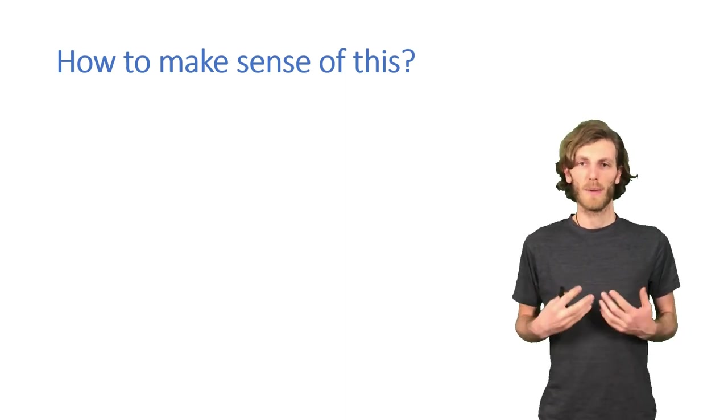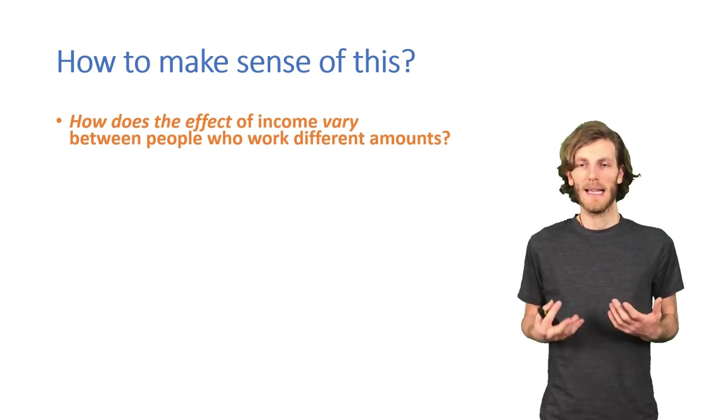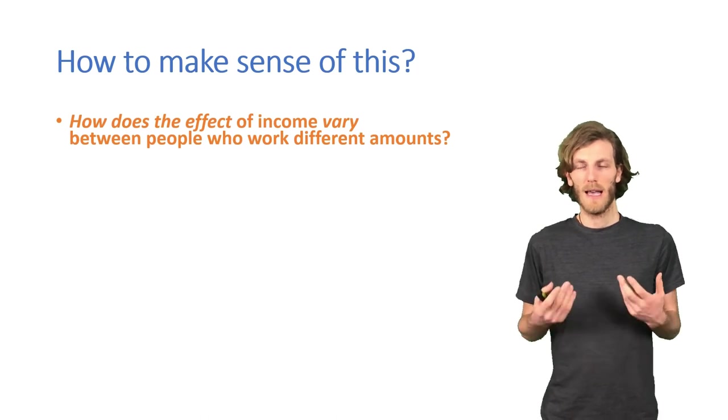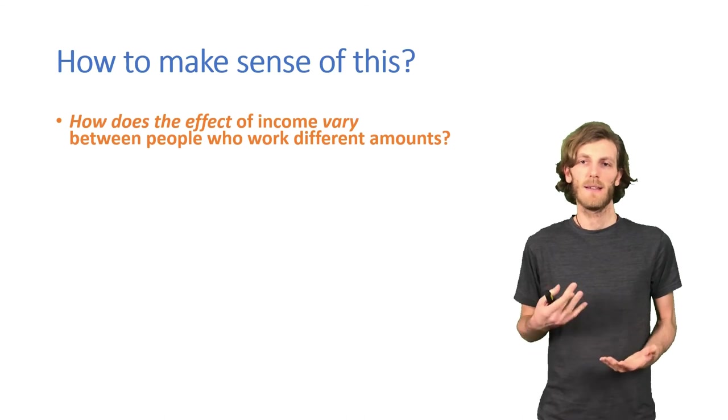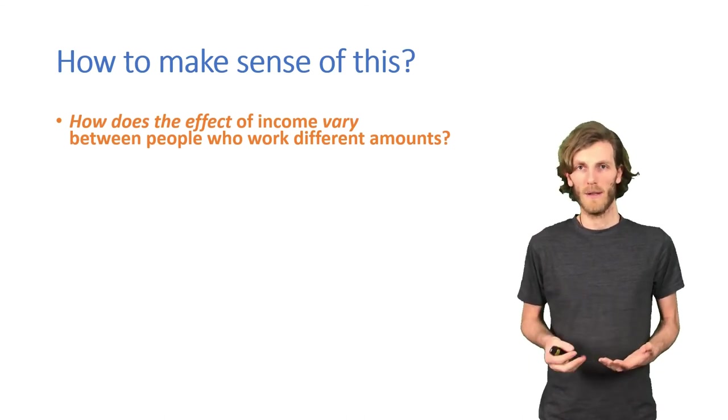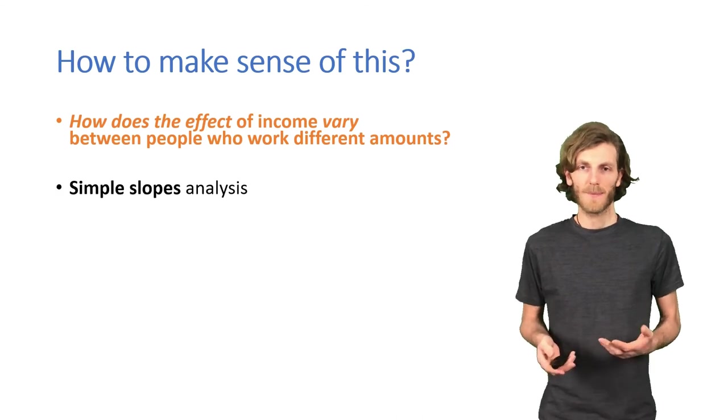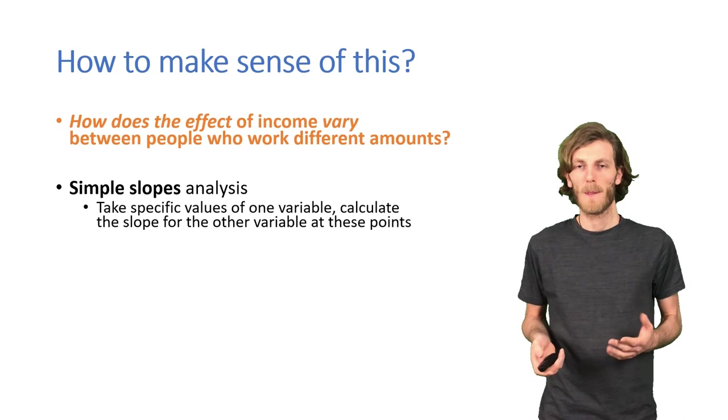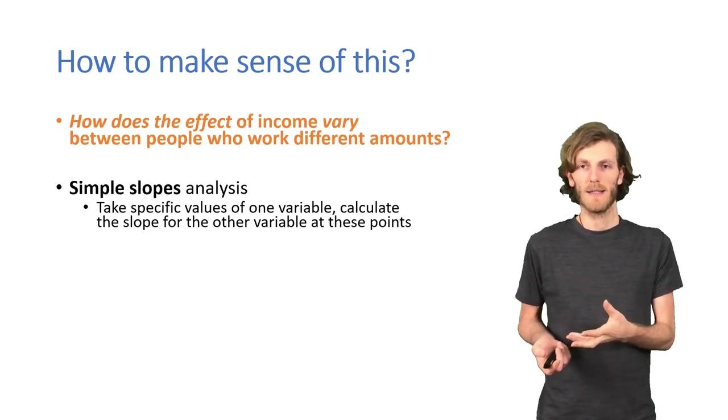So how do we do that? Well, firstly, by really figuring out what we are asking. So one thing that we might be asking is the typical moderation question. So how does the effect of income vary depending on working hours? If we want to answer that, the way to do it is to run a so-called simple slopes analysis. And that's just about picking a couple of specific values for working hours and then calculate the slope that income has at those particular values of working hours.